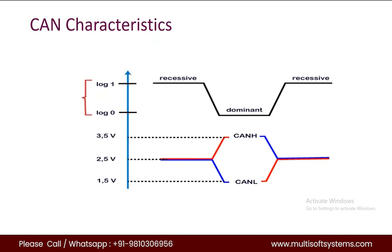With the help of differential voltage we will be determining how zero and one are transmitted on the CAN bus. Basically, zero is determining a dominant bit and one will be a recessive bit. This figure shows a voltage graph of the voltage level of CAN low and CAN high. In logic one it is recessive and logic zero it is dominant.